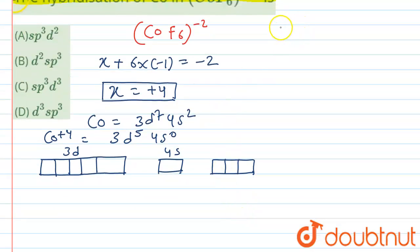Now there is one catch here. Our fluorine, in the case of cobalt plus four, will be acting as a strong field ligand. It is a strong field ligand.